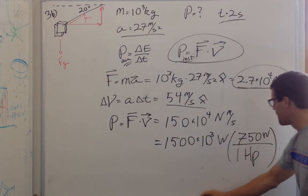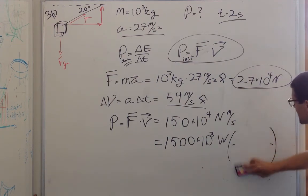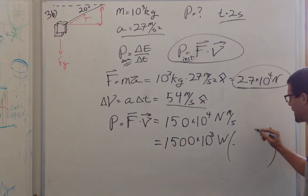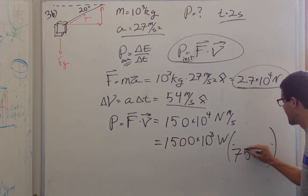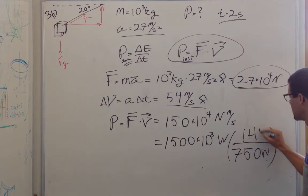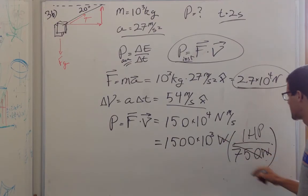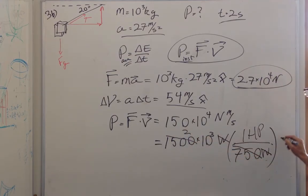This wouldn't help me though, because I mixed it up. So if I turn it around like this and say it's 750 watts in 1 horsepower, now I'm good and I can cancel the watts with the watts, and I've got 2,000 horsepower.